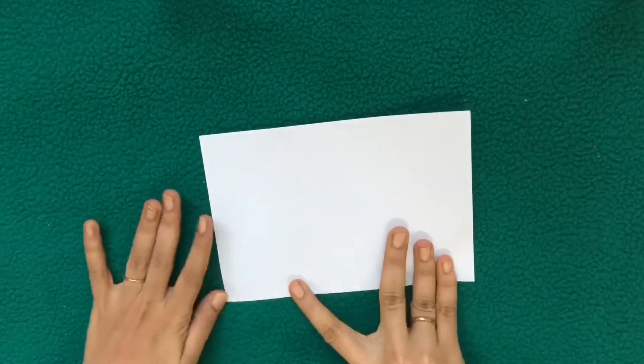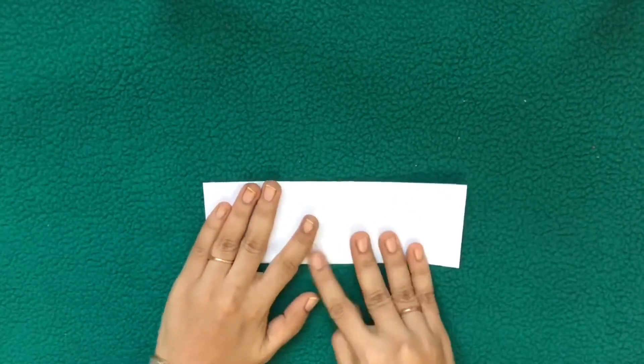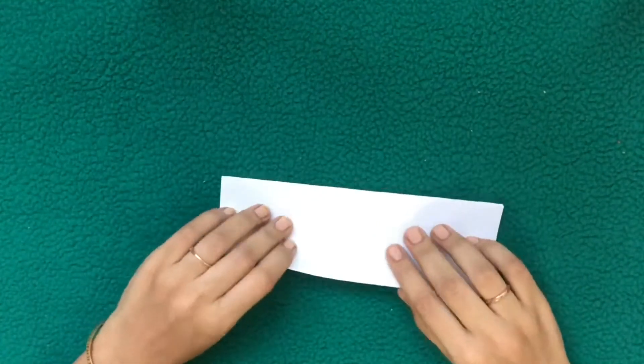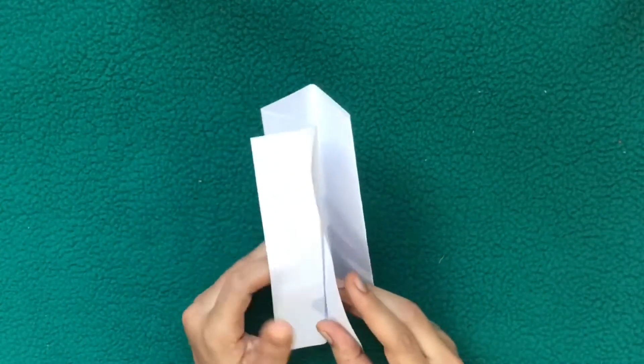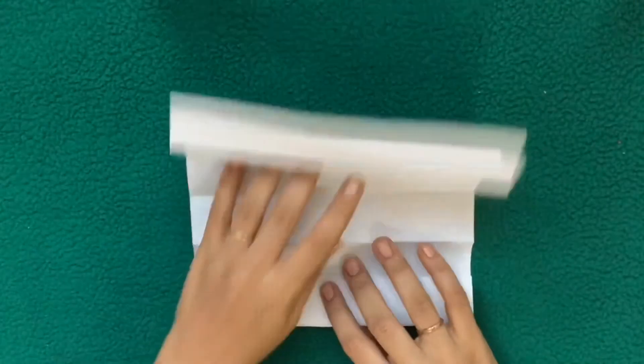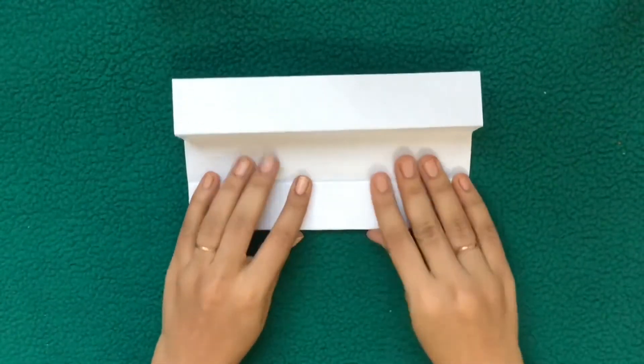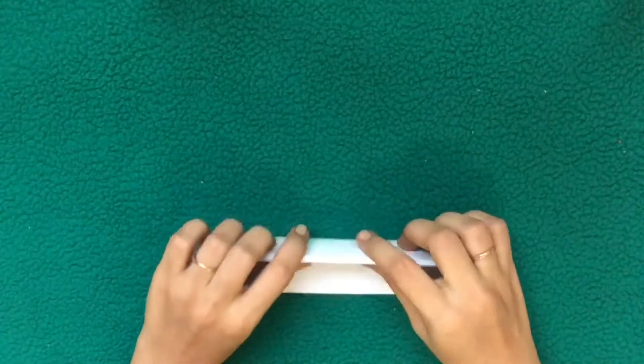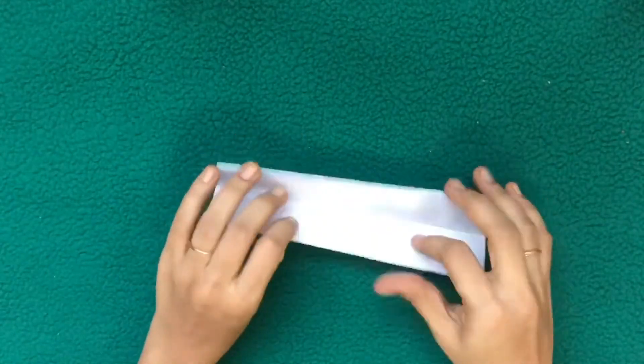First take the paper and fold into half, again into half, and again fold into half. Now unfold it. Now make a roll, that is fold over and over. Next one, zigzag fold. Follow the same procedure, fold over and over and unfold it.